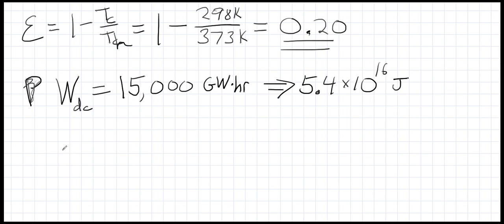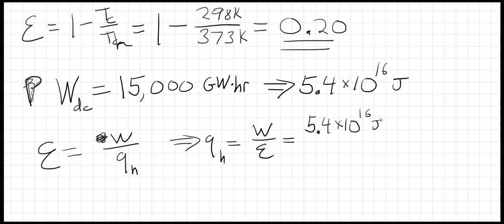Now that's actually the work output. The question is how much heat do we need to generate that? Well, since efficiency is defined as the amount of work that you get out divided by the heat that you put in, we can see that the heat that we need to put in is just going to be the work divided by the efficiency. The work that we want to get out is 5.4 times 10 to the 16th joules and the efficiency is only 0.2, so we're going to have to put in five times as much energy in the form of heat. Let's round this to 25 times 10 to the 16th joules, so that's the amount of heat we have to put in.